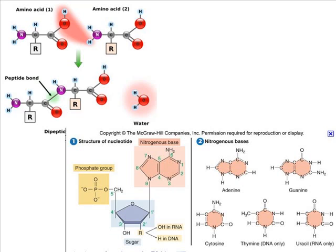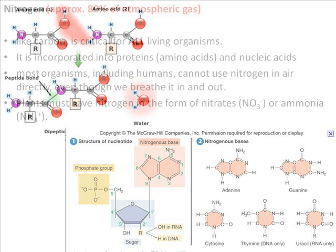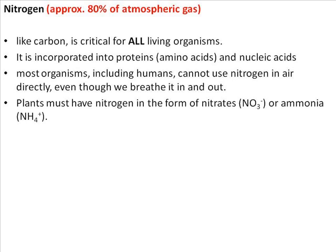In the nitrogenous bases — adenine, guanine, cytosine, thymine, and uracil, common in RNA and DNA molecules — you will find nitrogen atoms. The most prominent form of nitrogen is nitrogen gas, N2 — two nitrogen atoms covalently bonded — comprising 80% of the atmospheric gas. However, most organisms, including ourselves, cannot use nitrogen in the air directly. We need to acquire nitrogen in another form. We breathe in a lot of nitrogen but breathe it back out without utilizing it. Plants use nitrogen in the form of nitrates or ammonia. For converting nitrogen gas into nitrates and ammonia, we need microorganisms — they play a major role.